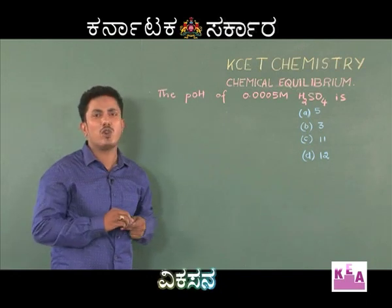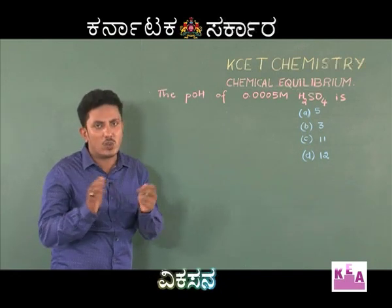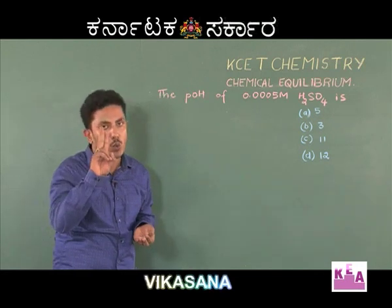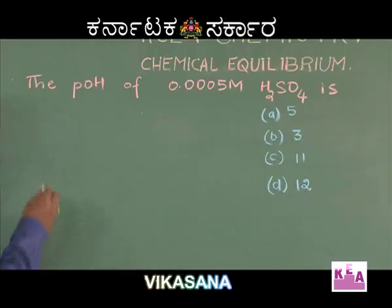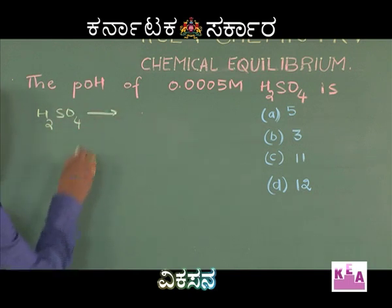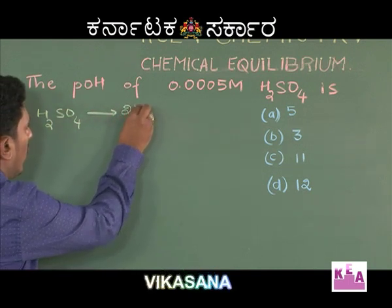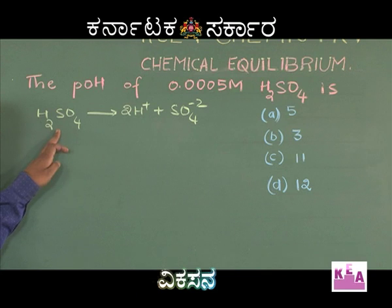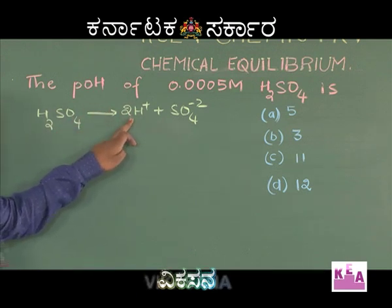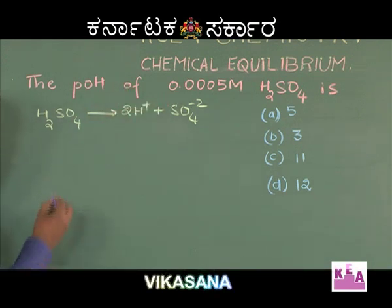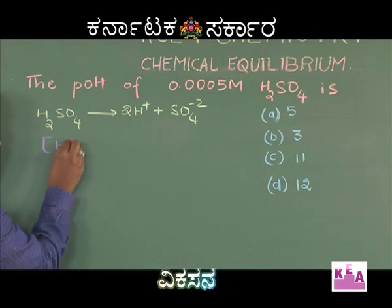H₂SO₄ is a strong acid and it dissociates completely, but when H₂SO₄ dissociates it gives 2 H⁺ ions and 1 sulfate ion. So if we take 1 molar H₂SO₄ solution, we get 2 molar H⁺ ions.